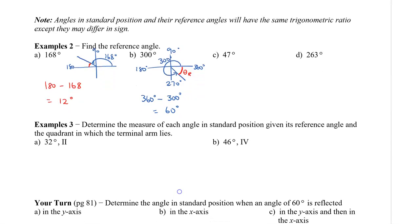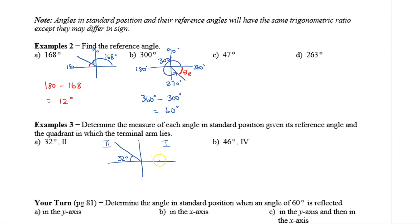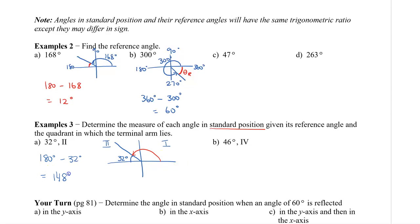Now let's look at a different kind of example: determine the measure of each angle in standard position, given the reference angle and the quadrant in which the terminal arm lies. In this example we're going backwards — I've given the reference angle and told you the quadrant. If the angle is in quadrant 2 with a reference angle of 32 degrees, then drawing it out, the 32 degrees is the small angle near the x-axis. To find the standard angle, we calculate 180 minus 32, which gives us 148 degrees.